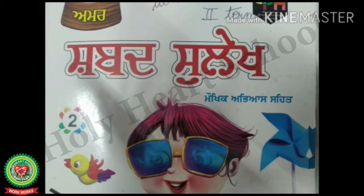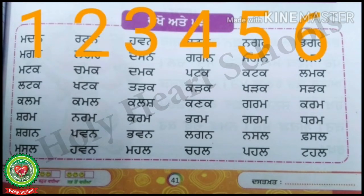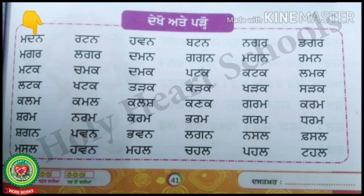Given on page number forty one of the Shabbat Sulek book only. So take out your Shabbat Sulek book and open page number forty one. On this page you can see different three letter words given in six lines. Now we will read all the words one by one.